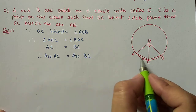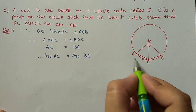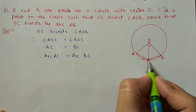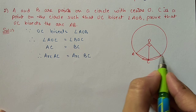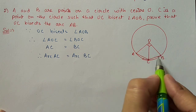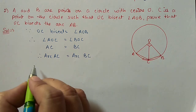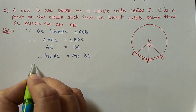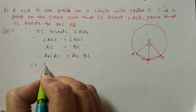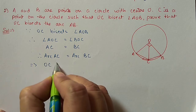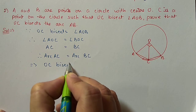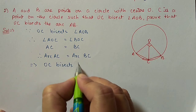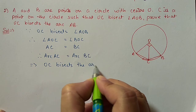Equal chords cut equal arcs. So therefore, arc AC is equal to arc BC. These two arcs are equal, which means C is the midpoint of the arc, so OC bisects this arc also. Therefore, OC bisects the arc AB.